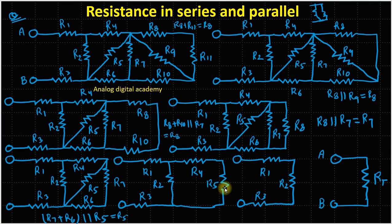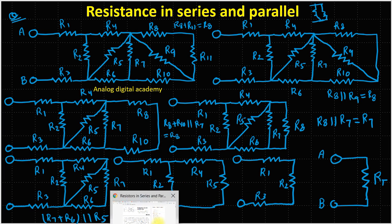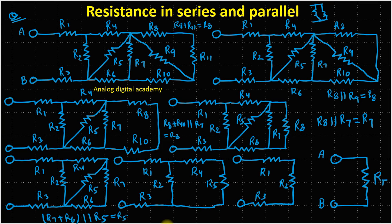So now it becomes R5. You can see this combination, and R4 will be in series. So R4 and R5 are in series. And this combination will be in series, and this R2 is in parallel with this combination. You can clearly see this is in parallel — this branch and this branch in parallel. So you can write: R4 plus R5 in series, and this combination in parallel with R2.